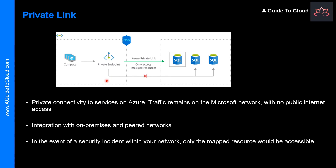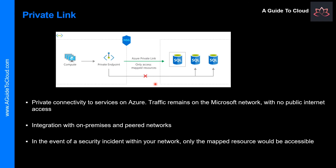So what is Private Link? Azure Private Link provides private connectivity from a virtual network to Azure platform as a service, customer-owned, or Microsoft partner services. It simplifies the network architecture and secures the connection between endpoints in Azure by eliminating data exposure to the public internet. The benefits of Private Link include: private connectivity to services on Azure, integration with on-premises and peer networks, protection against data exfiltration for Azure resources, and services delivered directly to your customer's virtual network.